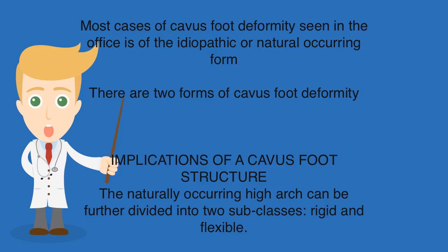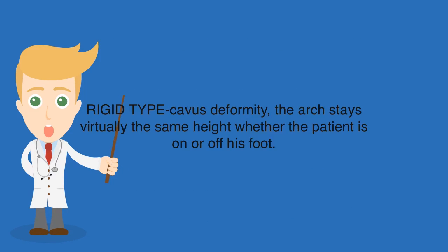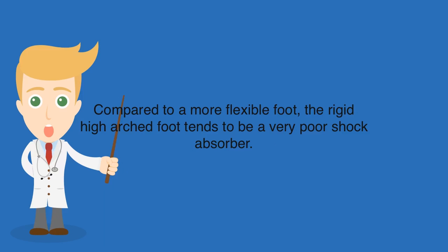There are two forms of cavus foot deformity. The naturally occurring high arch can be further divided into two subclasses: rigid and flexible. With rigid type cavus deformity, the arch stays virtually the same height whether the patient is on or off their foot. Compared to a more flexible foot, the rigid high arched foot tends to be a very poor shock absorber.